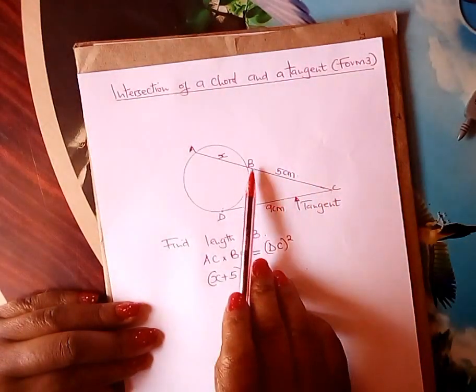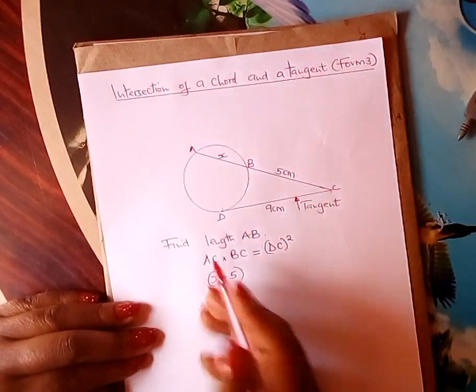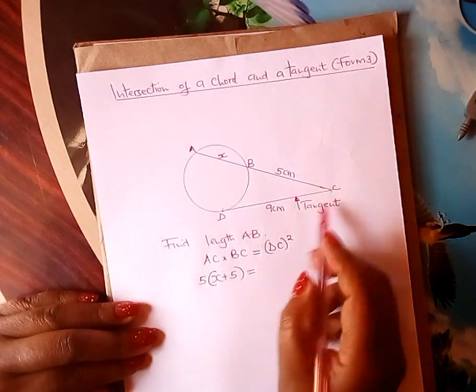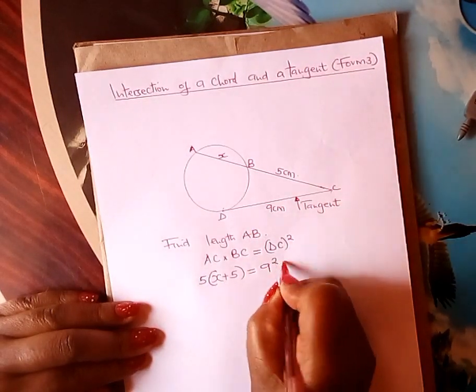Multiplied by what? BC. BC is 5. Come and write it here so that you are able to multiply. AC times BC equals DC squared, which is 9 squared.